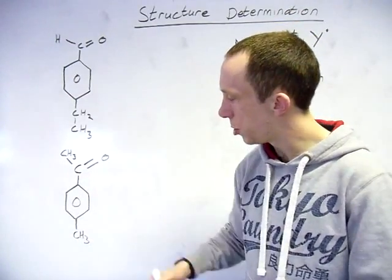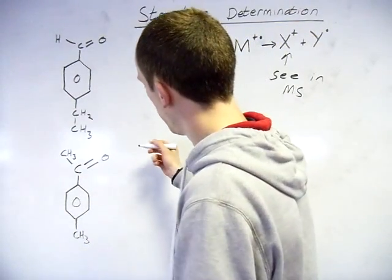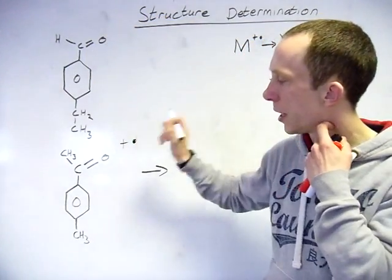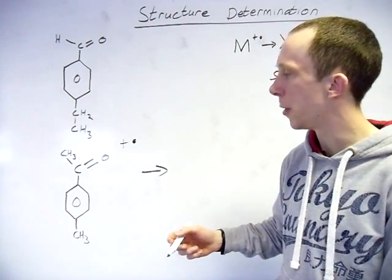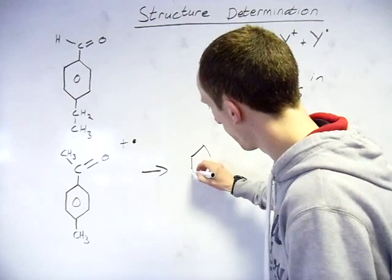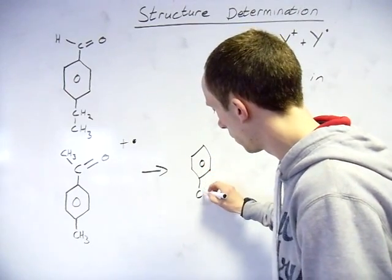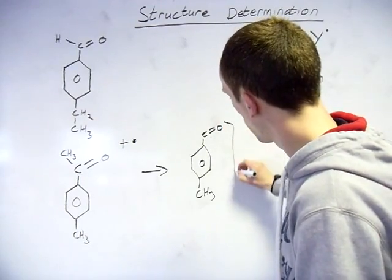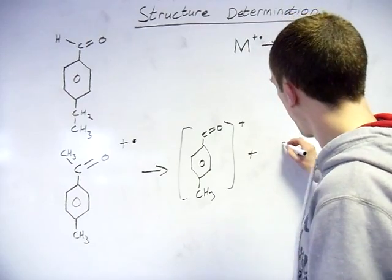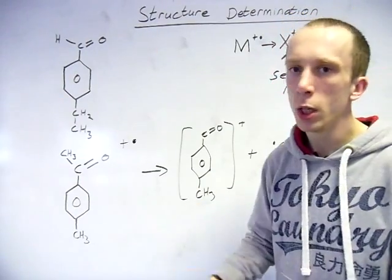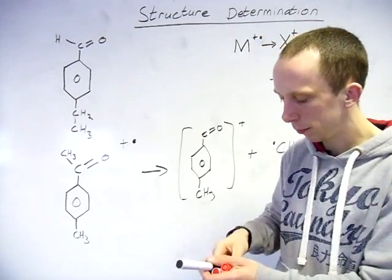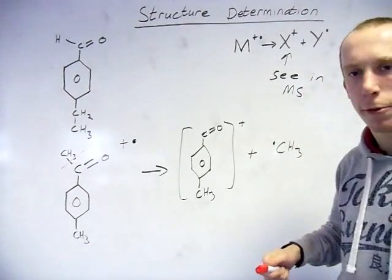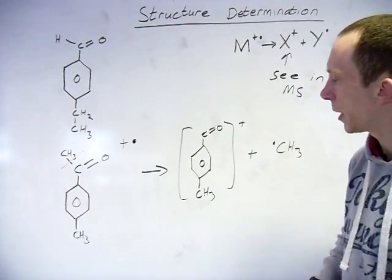So an example using just this compound here, for how that could occur. So if I say this is my molecular ion, I've just ionized it, I've knocked an electron out, this is going to smash up. What I could say - this bond here snaps. So you'll notice there, the methyl free radical leaves.